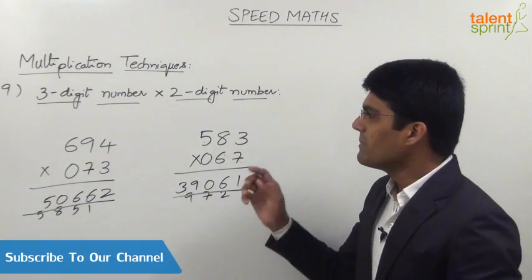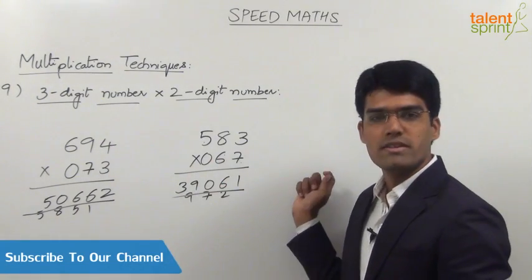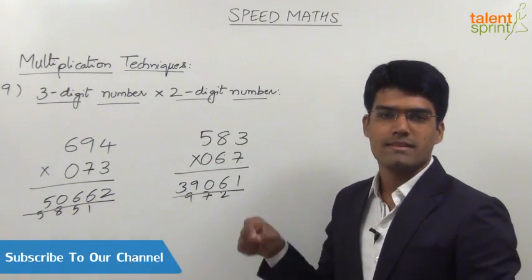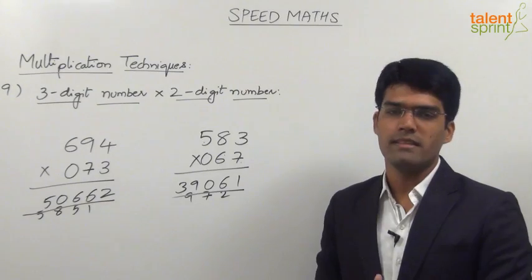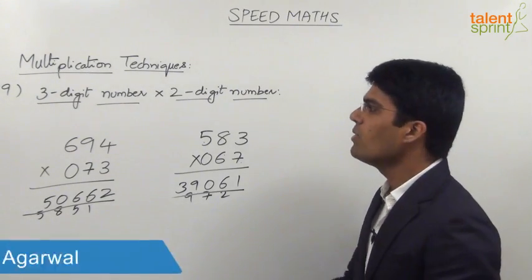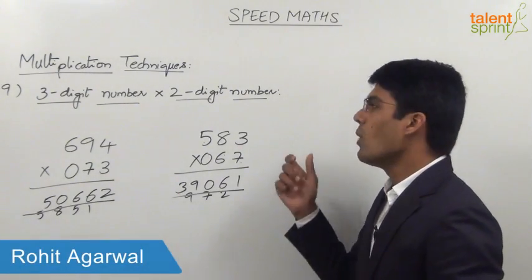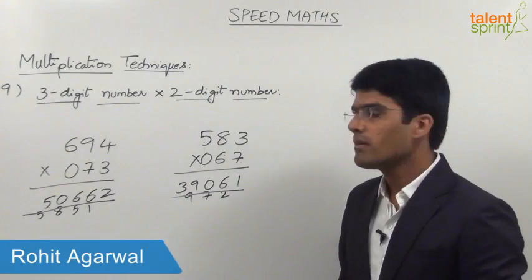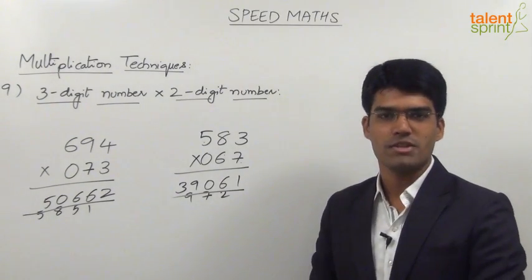Multiplication of a three-digit number with a two-digit number is quite similar to three-digit multiplication. You can multiply a three-digit number with a two-digit number by placing a zero in front of the two-digit number and applying the same five-step procedure.